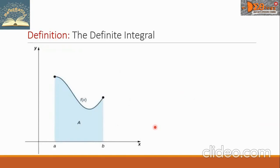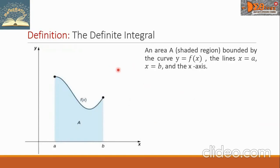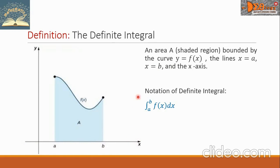For illustration, we have this figure. The area A, the shaded region, is bounded by the curve y equals f of x, the lines x equals a and x equals b, and the x-axis. The notation of the definite integral is the integral from a to b of f of x dx.